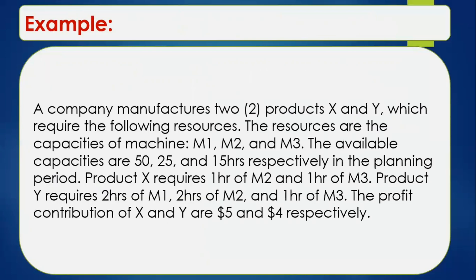Let's now look at an example. A company manufactures two products, X and Y, which require the following resources: three machines — Machine 1, Machine 2, and Machine 3 — with available capacities of 50, 25, and 15 hours respectively. Product X requires one hour of Machine 2 and one hour of Machine 3. Product Y requires two hours of Machine 1, two hours of Machine 2, and one hour of Machine 3. The profit contributions of X and Y are $5 and $4 respectively.